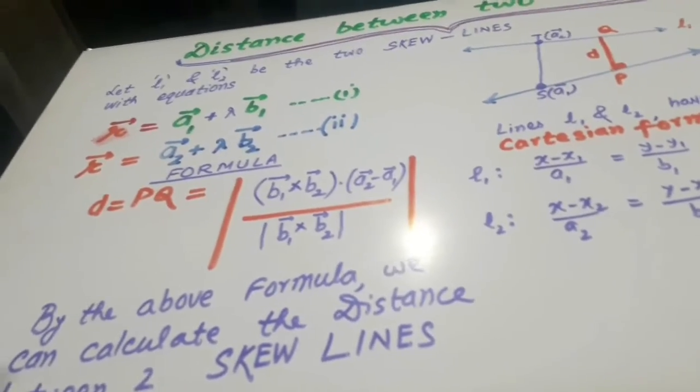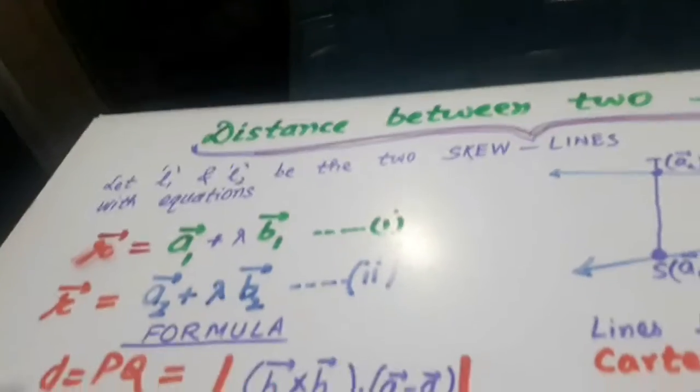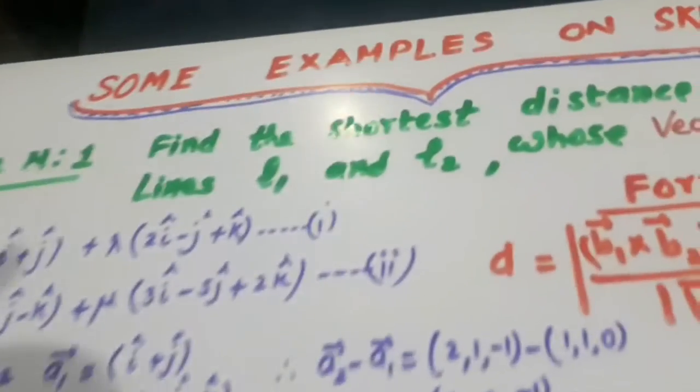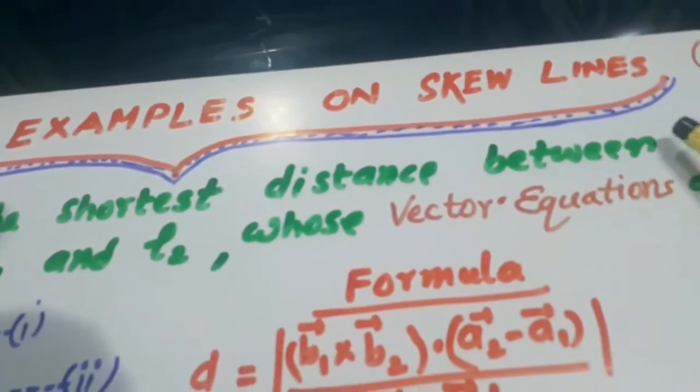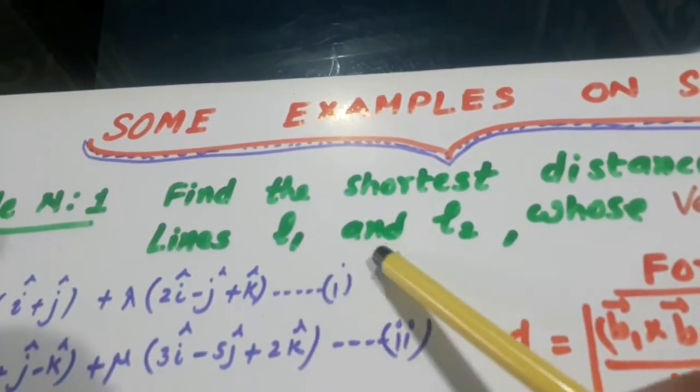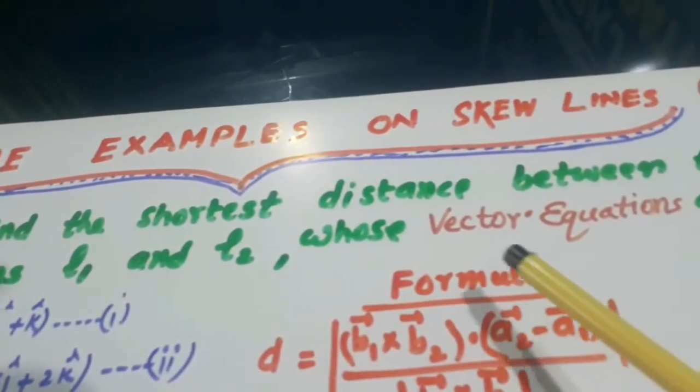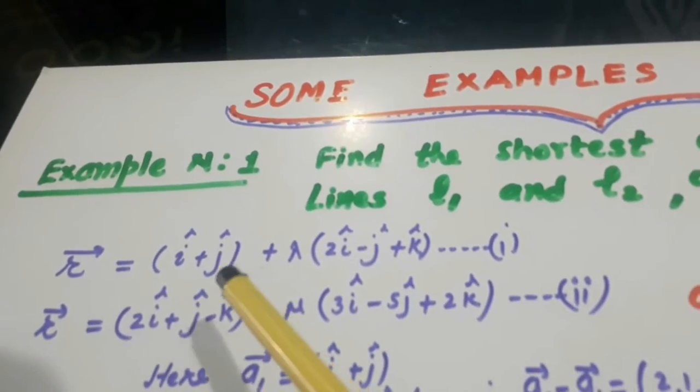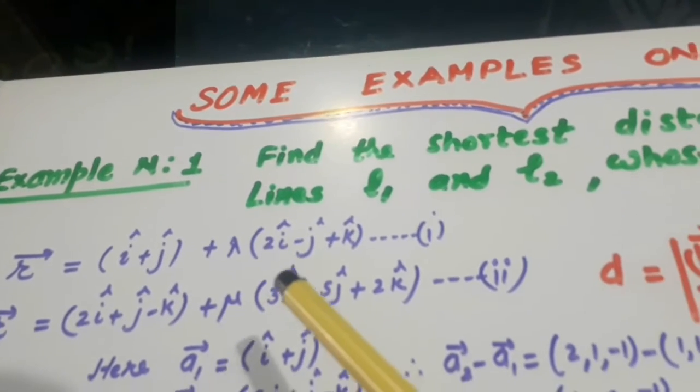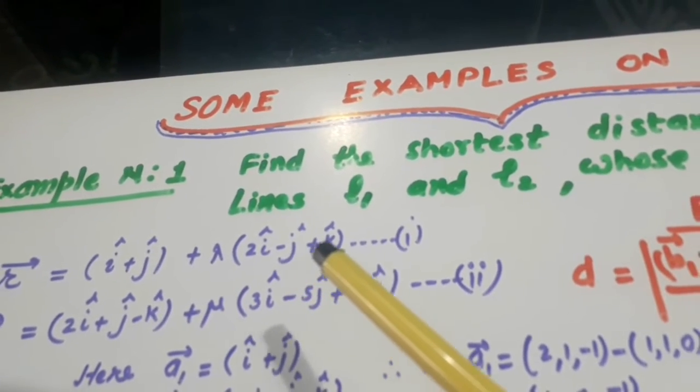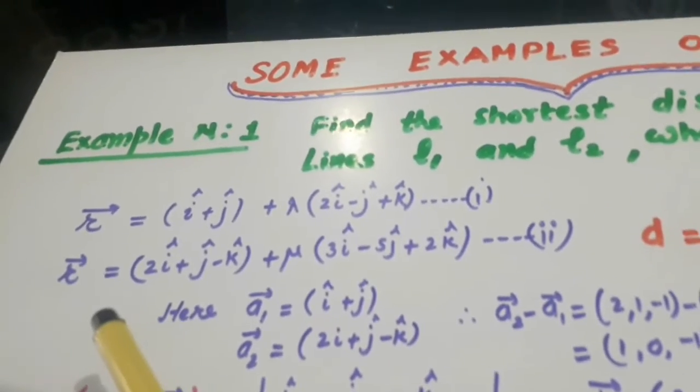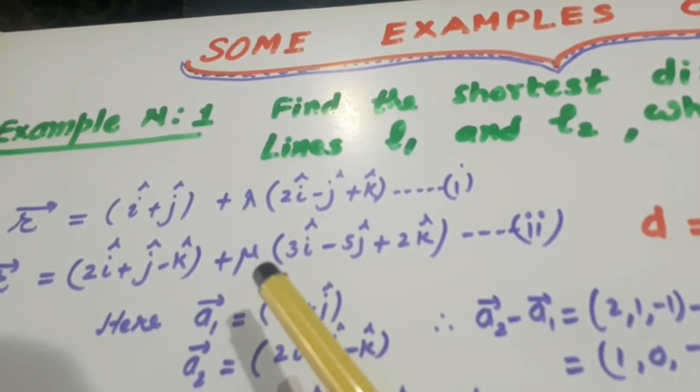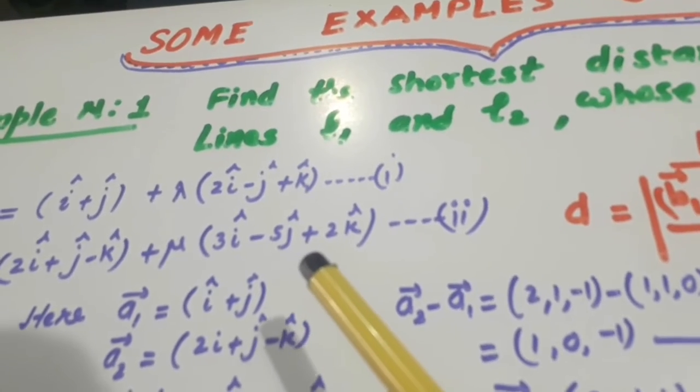Look here, the example is, find the shortest distance between the lines L1 and L2, whose vector equations are R equals i plus j plus lambda times 2i minus j plus k.